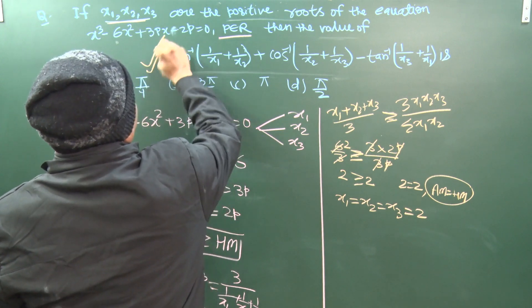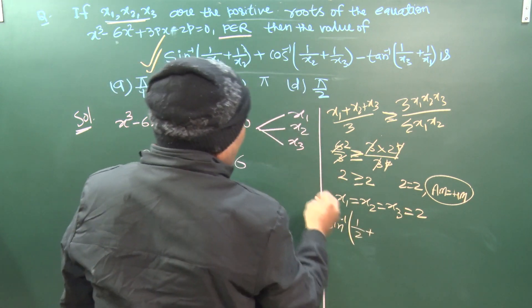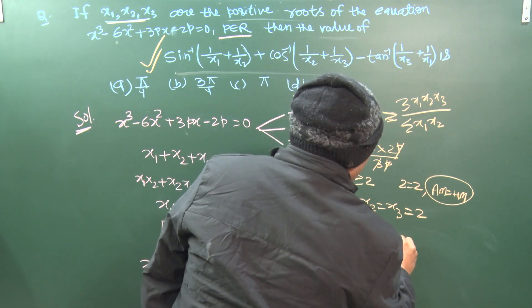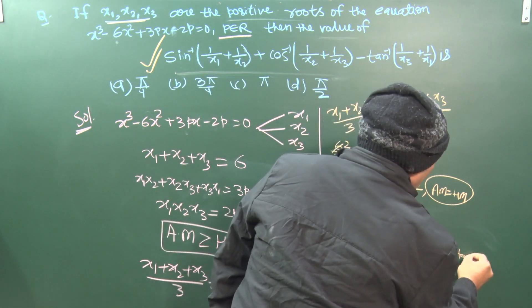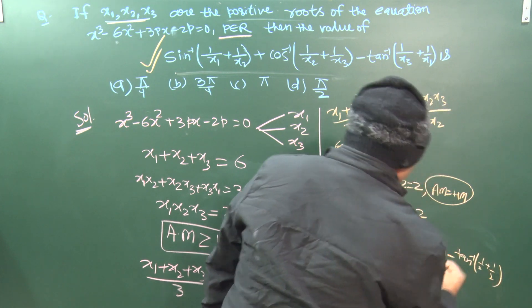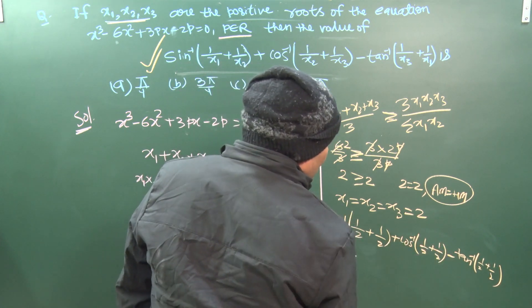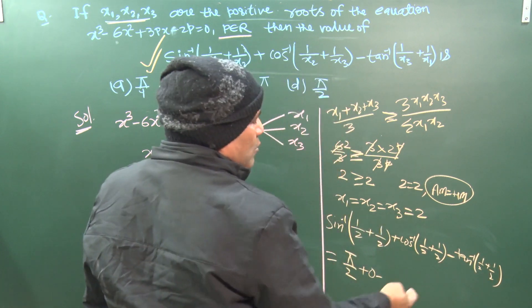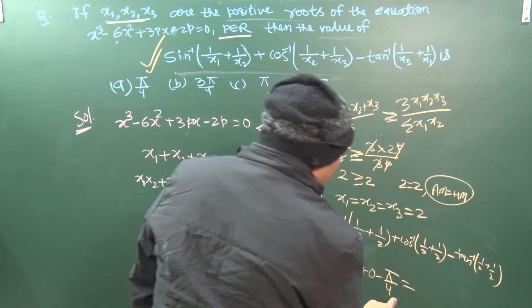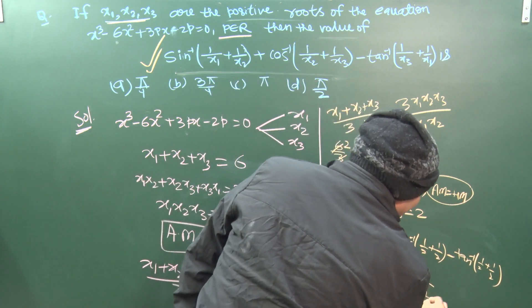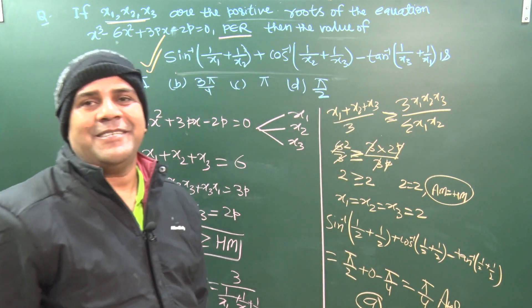Substituting x1 = x2 = x3 = 2 into the expression: sin⁻¹(1/2 + 1/2) + cos⁻¹(1/2 + 1/2) - tan⁻¹(1/2 + 1/2) = sin⁻¹(1) + cos⁻¹(1) - tan⁻¹(1) = π/2 + 0 - π/4 = π/4. The answer is π/4.